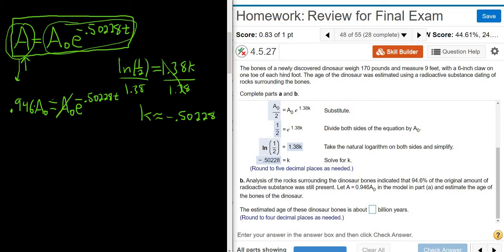As before, we'll divide by this. So we have 0.946. It's a very similar process to what we just did. E to the negative 0.50228T. And to get rid of the E, we take the natural log, 0.946. And then here it's natural log, E to the negative 0.50228T.